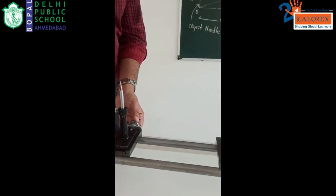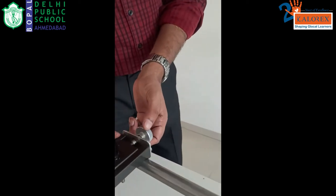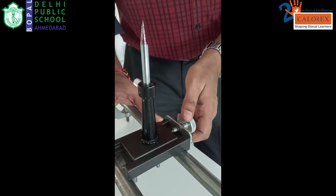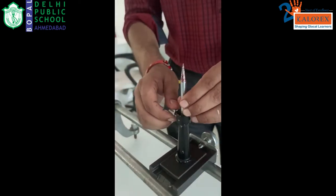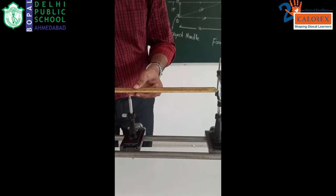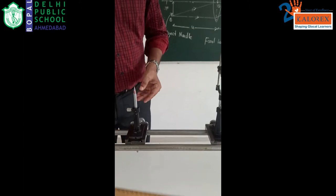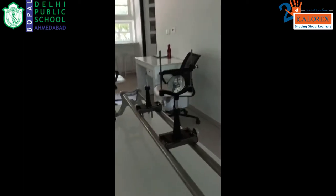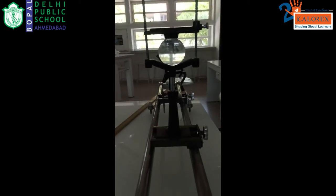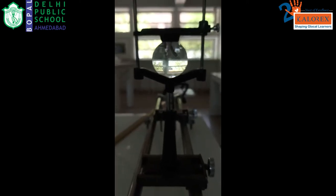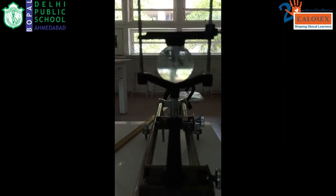There is also one more screw available on this setup to move the needle sideways. Let us observe the image of this needle — the tip is coinciding exactly with the optic centre — and let us see it on the other side of the lens. The image will be an inverted image. I will focus using my camera so you can see the inverted image.